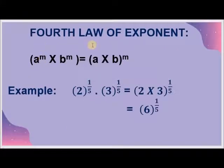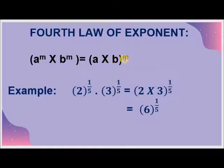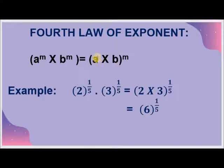The 4th law of exponent is a raised to the power m multiplied by b raised to the power m is equal to a into b to the whole power m. This means when we have the same powers and different bases and the terms are in multiplication, those numbers will multiply to a into b to the whole power m.